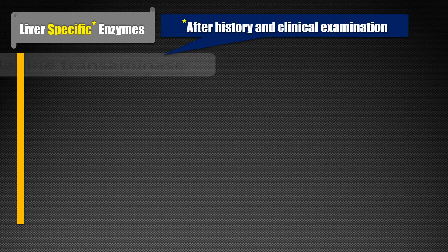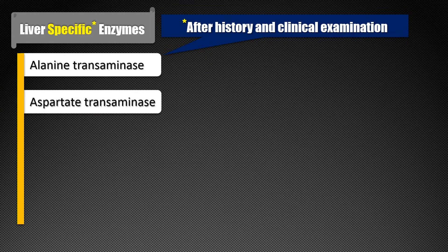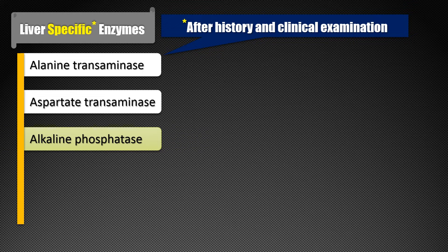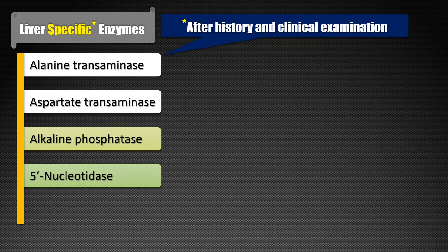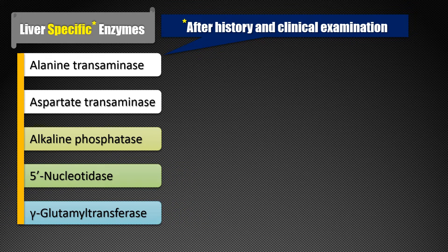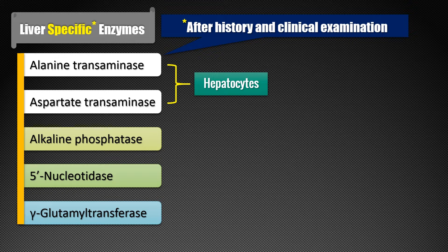The most important enzymes are alanine transaminase (ALT), aspartate transaminase (AST), alkaline phosphatase (ALP), 5'-nucleotidase, and gamma glutamyl transferase (GGT). Among these, ALT and AST are called aminotransferases or transaminases, and these two enzymes are usually expressed by hepatocytes or hepatic parenchymal cells, besides various other tissues or organs.